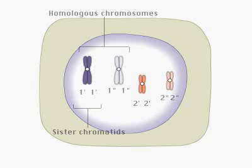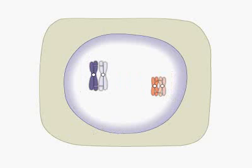Homologous chromosomes associate. Crossing over occurs between non-sister chromatids.